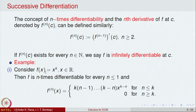Let us look at the example f(x) = x^k for x belonging to ℝ, where k is a positive integer. This function is differentiable at every point. The first derivative f'(x) = k·x^(k−1). When you differentiate again, the function is differentiable and the second derivative f''(x) = k(k−1)·x^(k−2).